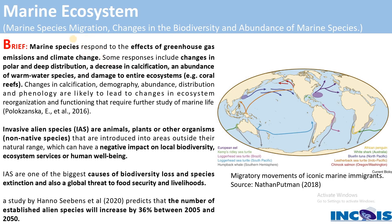Marine species are now being affected by greenhouse gas emissions and climate change. Responses include marine species migration toward polar and deep regions, a decrease in calcification, changes in abundance of warm water species, and damage to entire ecosystems like coral reefs. These are responses of the marine ecosystem to climate change, excessive warming, and ocean warming.